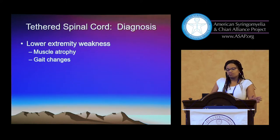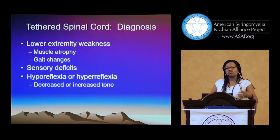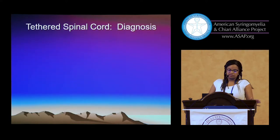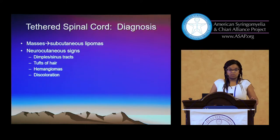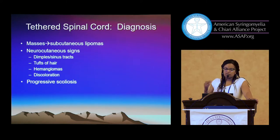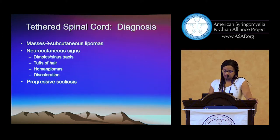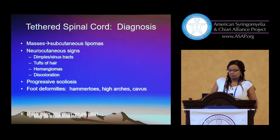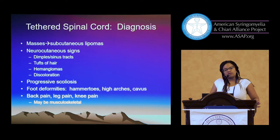In these patients, we see weakness in the legs, muscle atrophy, gait changes, problems with sensation. They can have increased or decreased reflexes. Bowel and bladder dysfunction is really the most common denominator of tethered cord. We see masses sometimes, which causes asymmetry in the appearance of a baby's back. Midline dimples and tufts of hair are important signs. If they're off to the side or lower than about S2, they probably don't indicate tethering. Progressive scoliosis can be caused by tethered cord, just as it can be caused by Chiari. In older children, we may see back pain, leg pain, and knee pain.